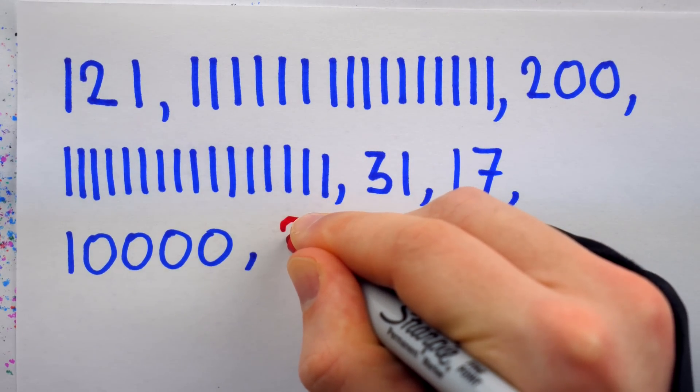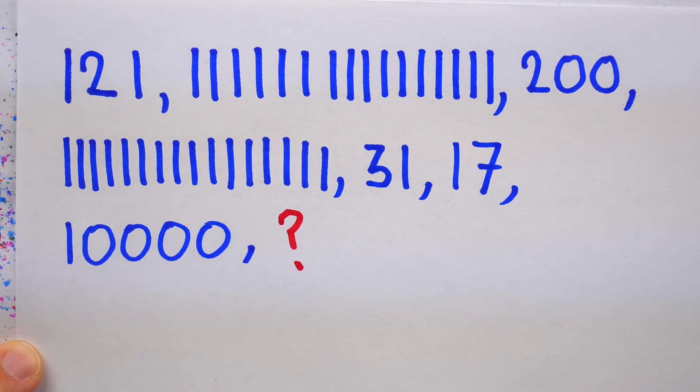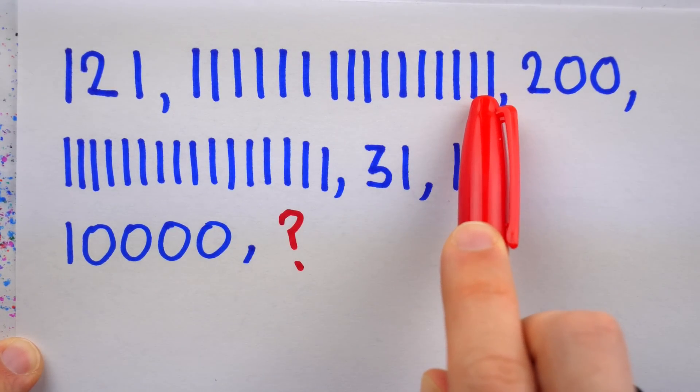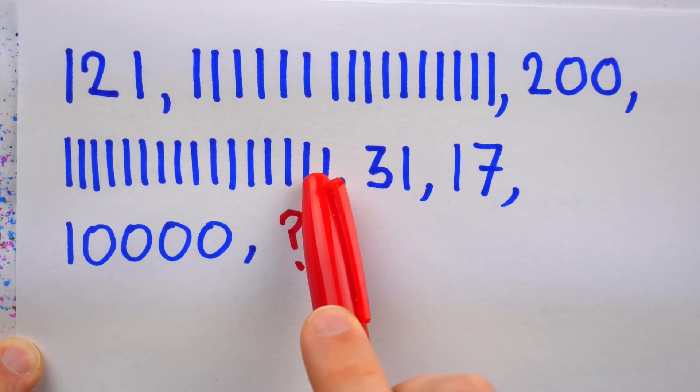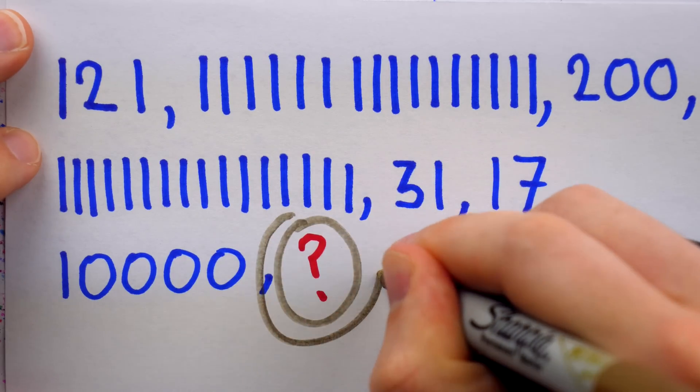And your objective is to find the next number in the sequence. To relieve you of the headache-inducing task of counting strokes, I'll tell you this is 16 ones, and this is 16 ones. So let me know in the comments what you think this last term in the sequence is.